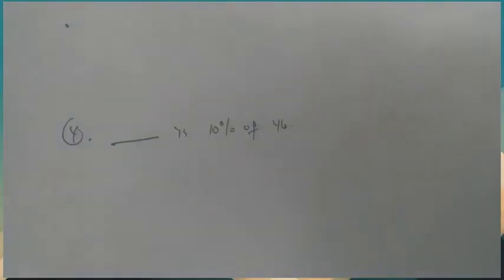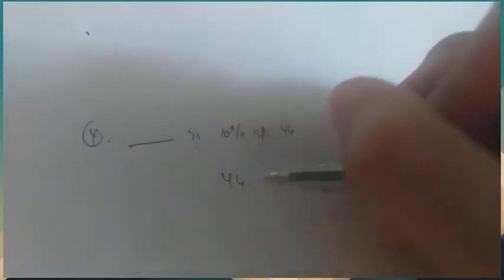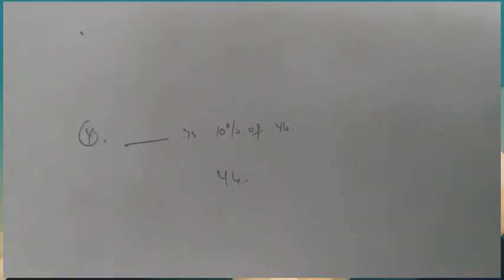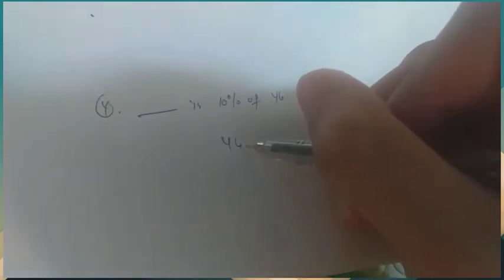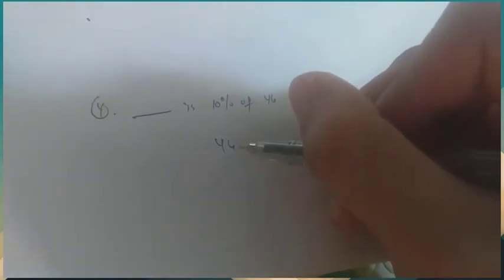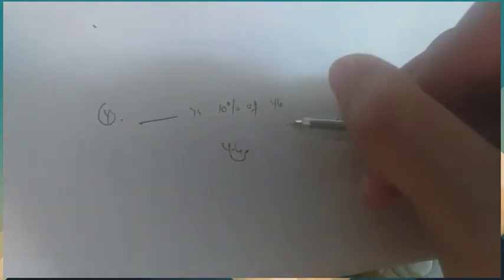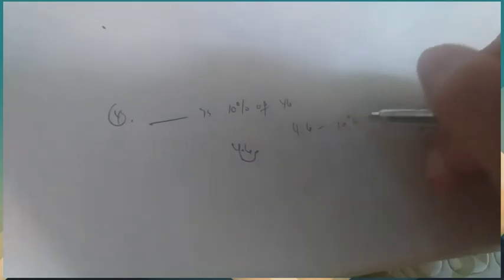What is 10% of 46? To get 10%, we move the decimal point one place to the left, so 46 becomes 4.6. That's 10% of 46. The correct answer is 4.6. Let's move to the last number, number 5.